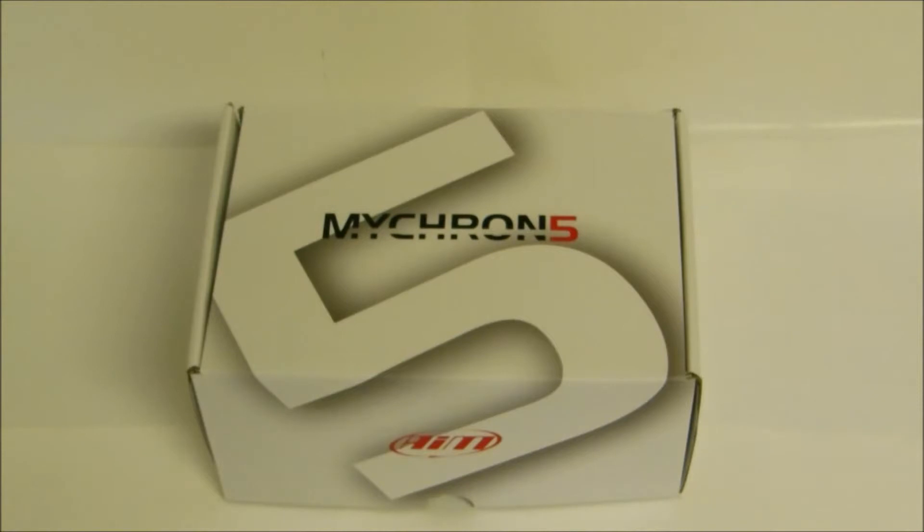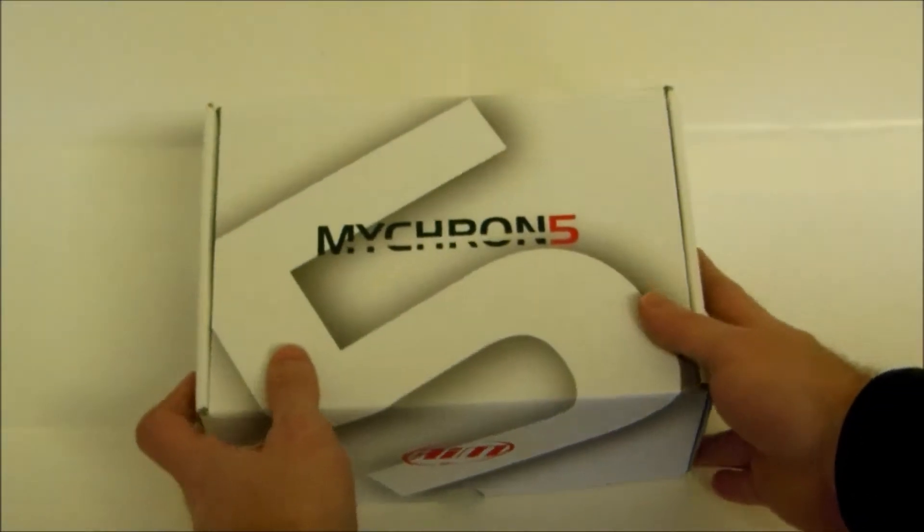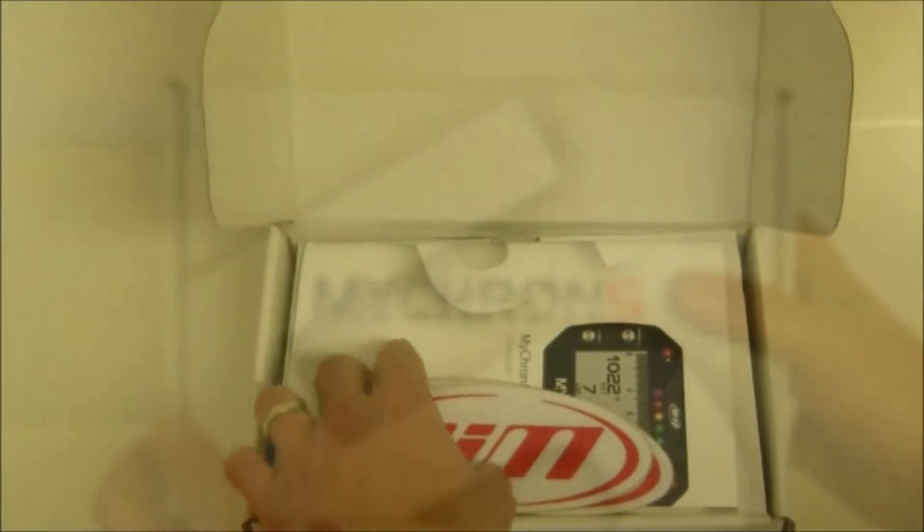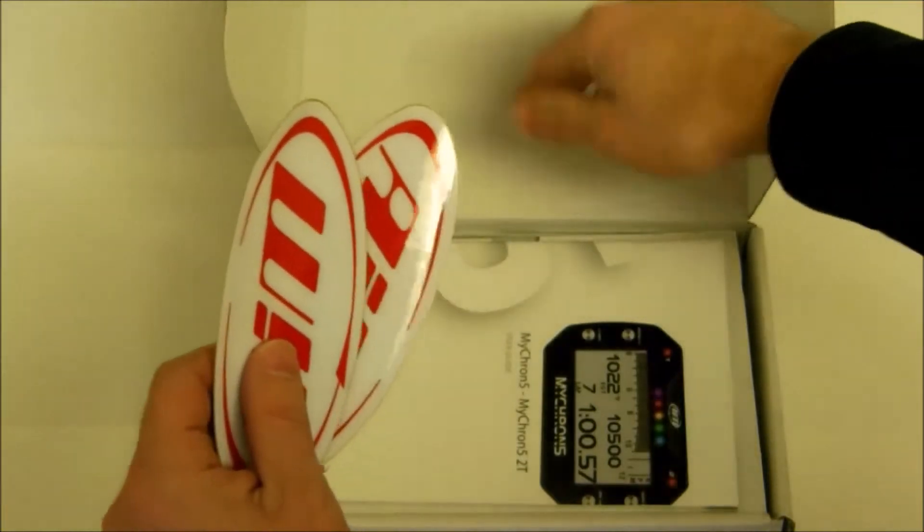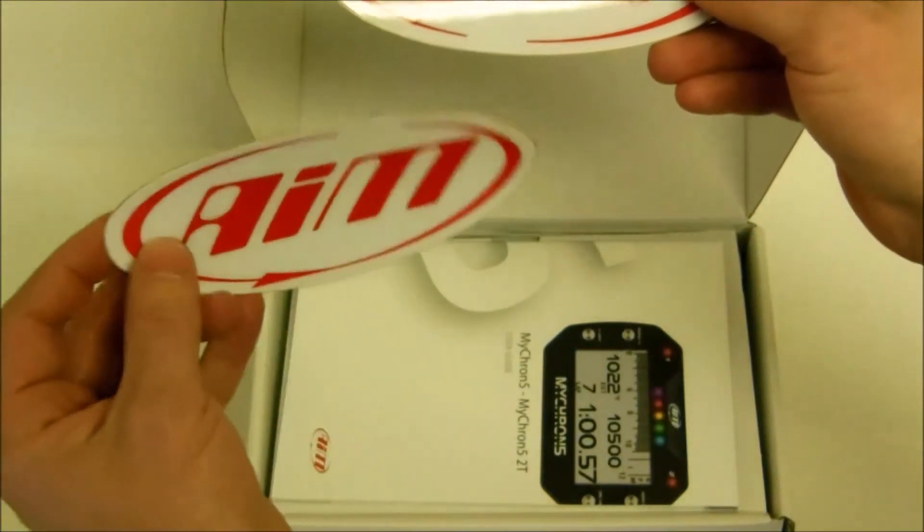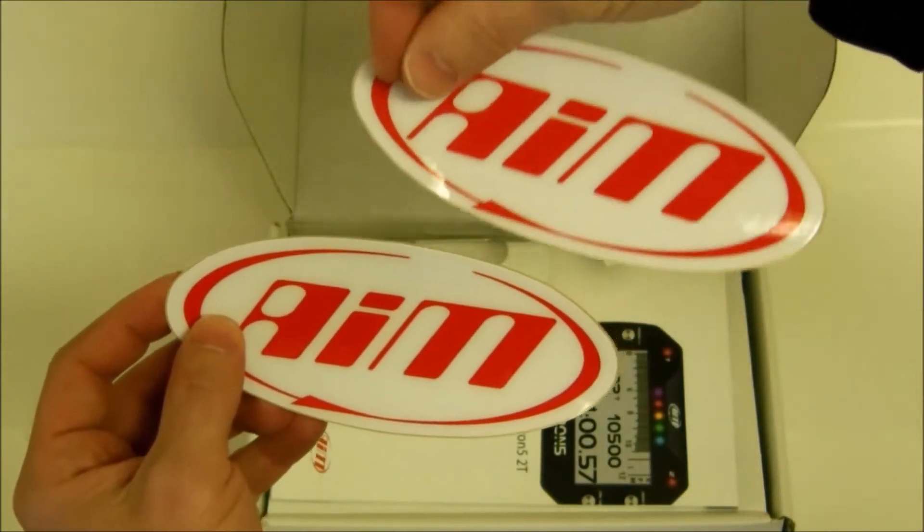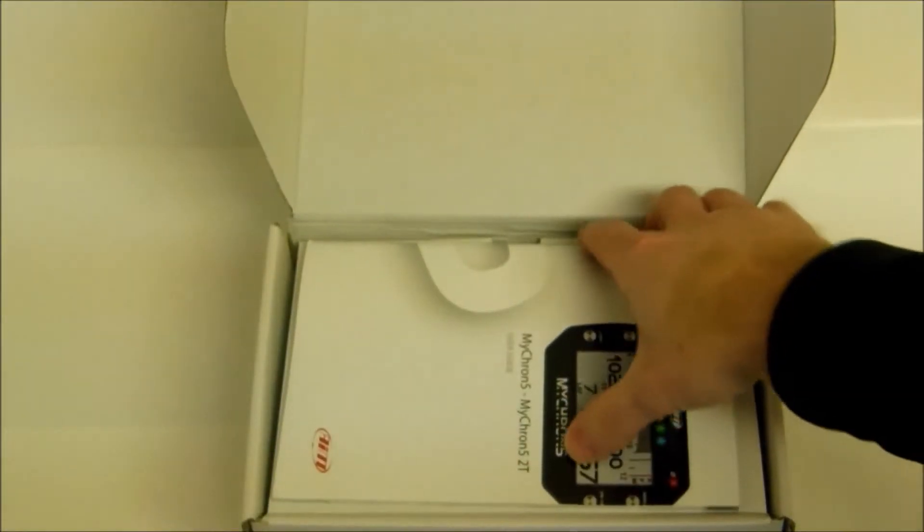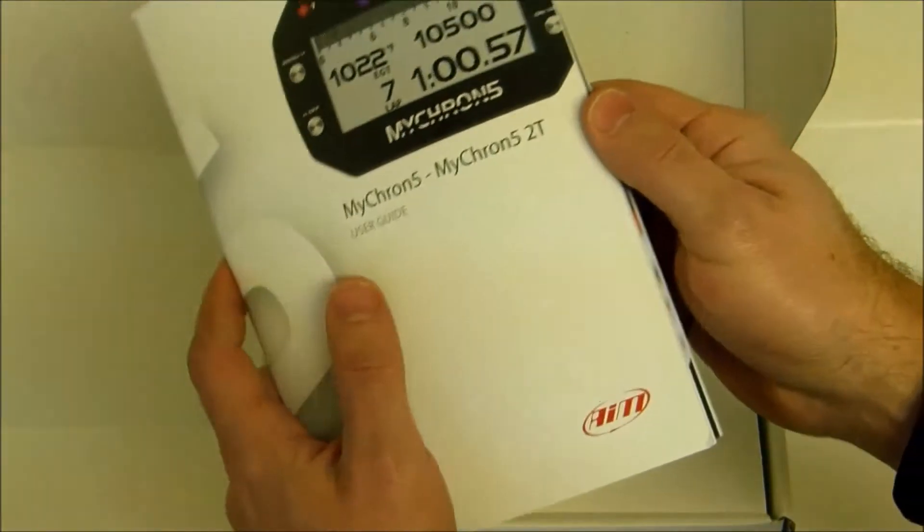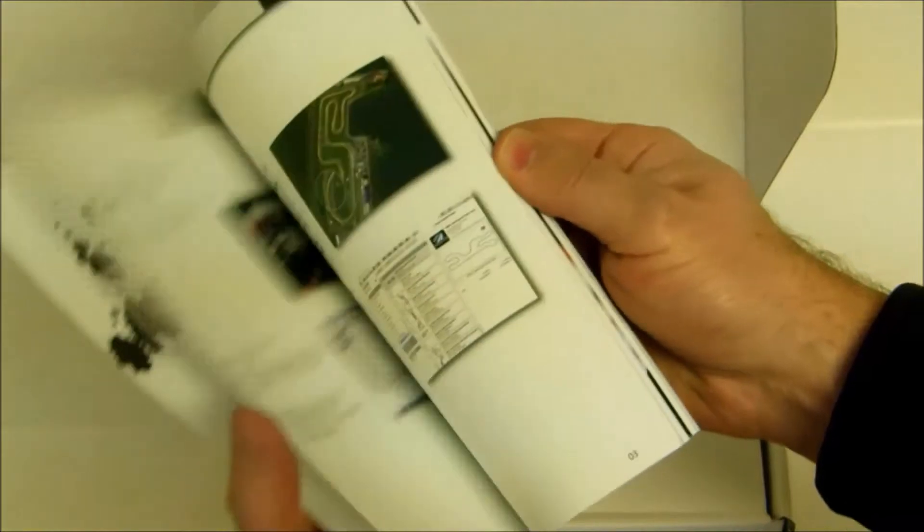Today we are unboxing a Micron 5 from AIM. In the box you will receive a couple of stickers for your kart bodies and whatnot. You will also get this full color paged manual that is very easy to read and follow.